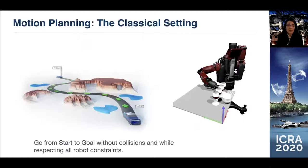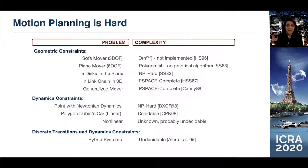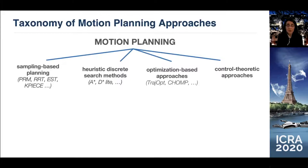Motion planning — the classical problem — is very well understood. We have a start, a goal, and we want to get from the start to the goal without any collisions, respecting all robot constraints. We all know this is a very difficult problem. Having the geometric version is very difficult — planning for a chain of N links in 3D space is a PSPACE-complete problem. Despite this, we have efficient solutions today for large classes of problems.